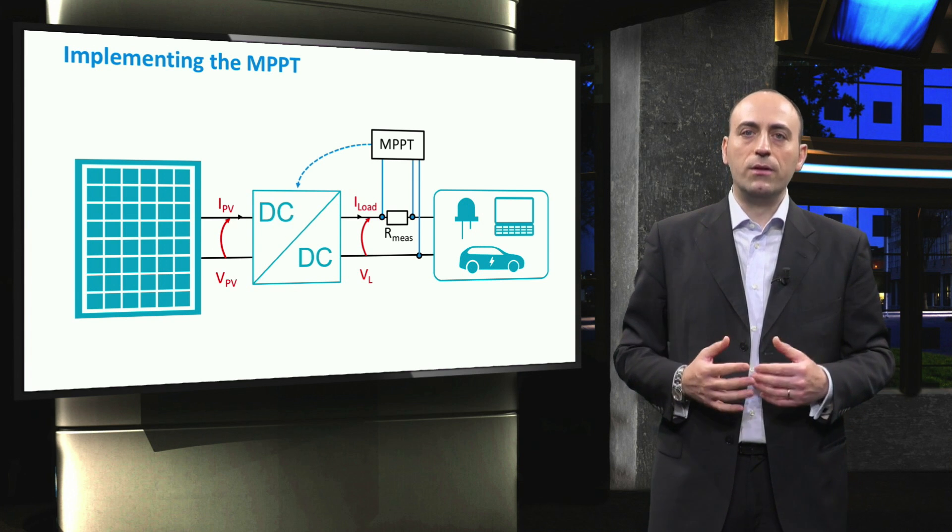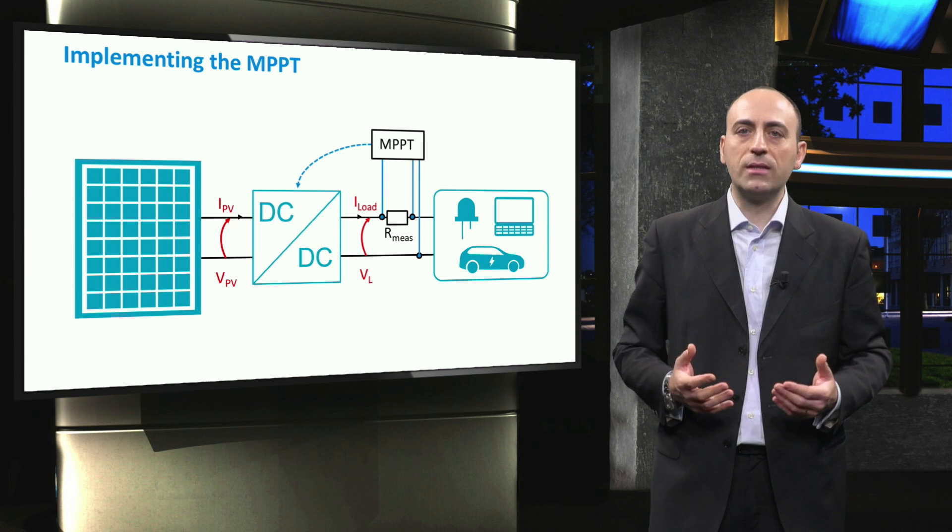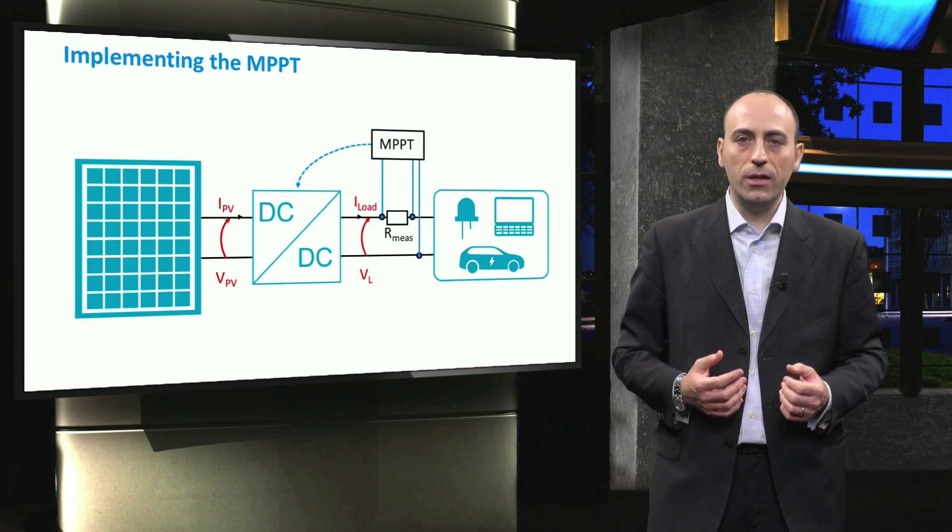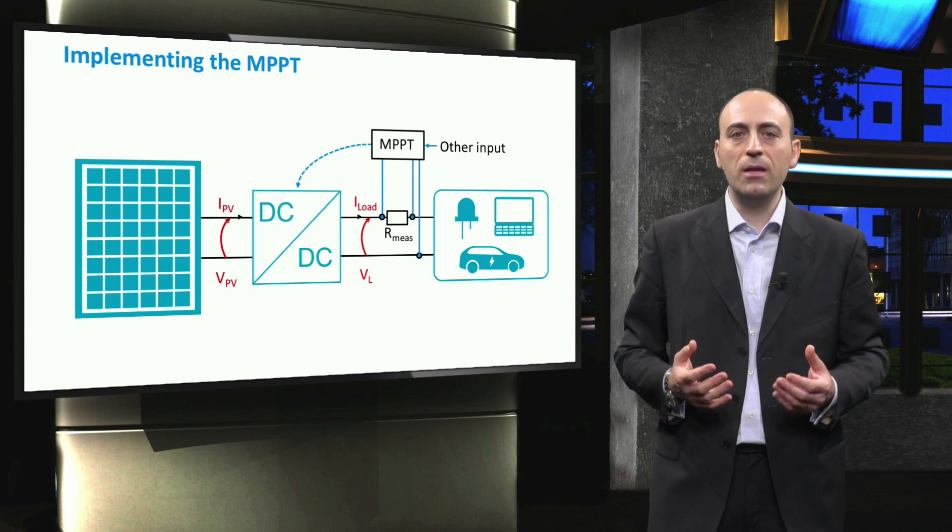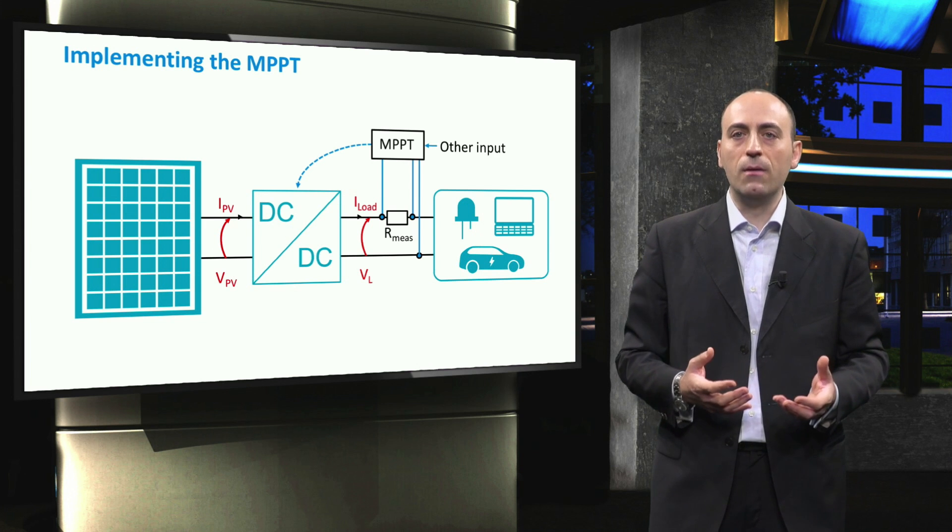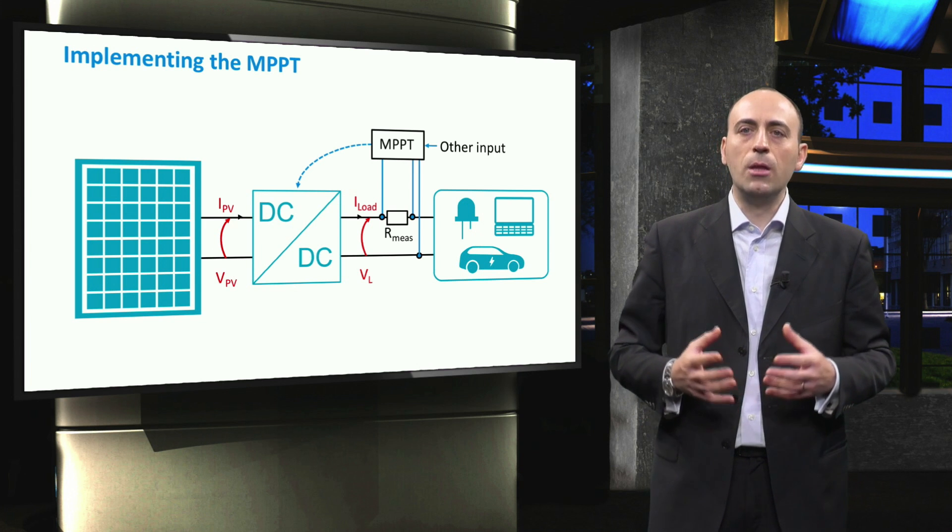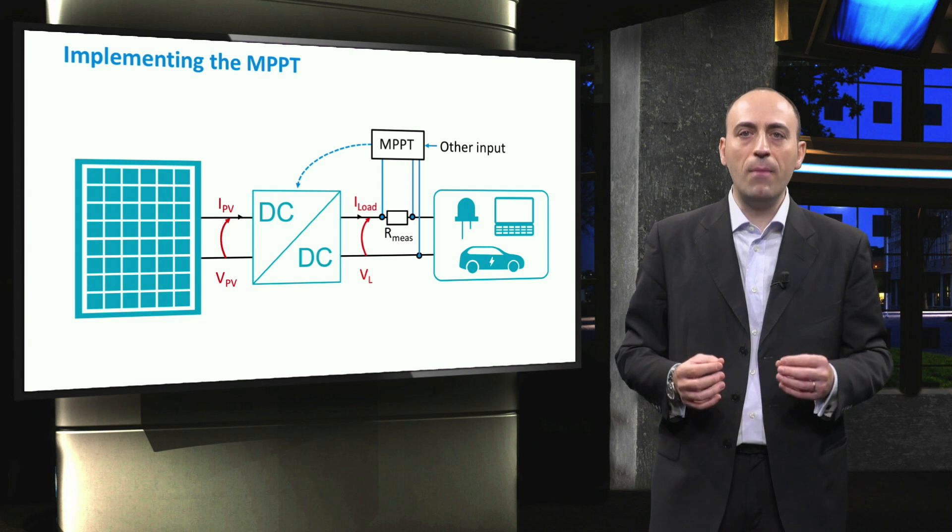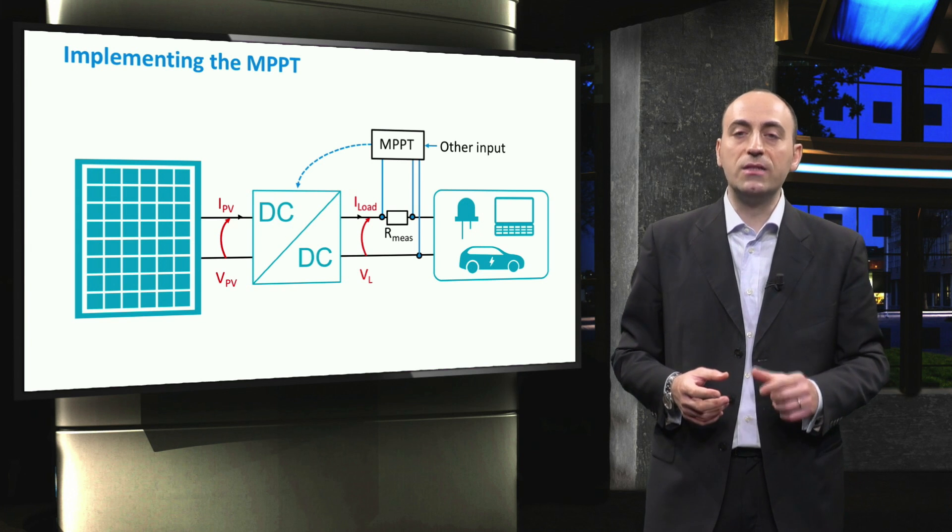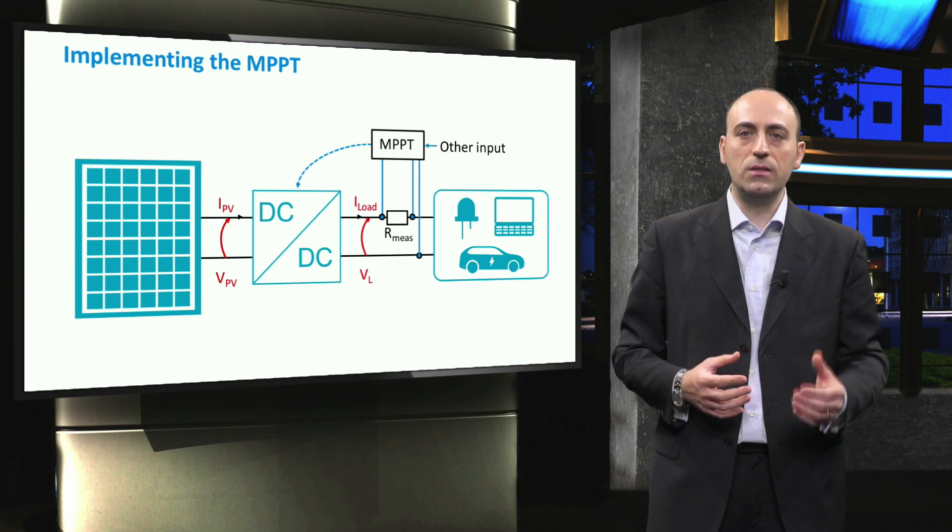Of course, the topology can be made more complex depending on the MPPT algorithm and other information that might be provided to the MPPT, for example the temperature of the module and the voltage before the load. In this way, the PV power is maximized by measuring the current and voltage and simultaneously varying the DC-DC voltages.